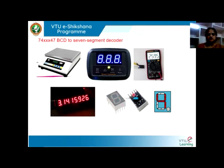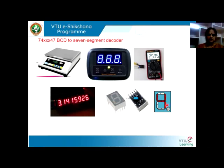This is how the 7-segment display looks. There are basically 10 pins in a 7-segment display, and it is called a 7-segment display because it has 7 segments in it. These segments are labeled A, B, C, D, E, F, G, and H. Segment H is normally used for indicating the decimal point.